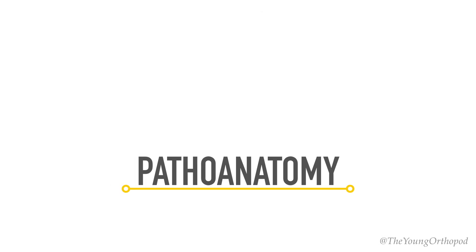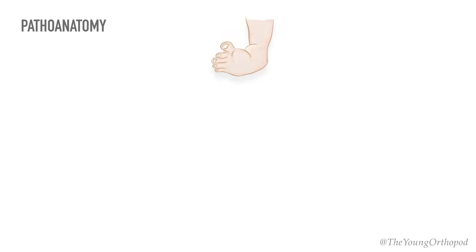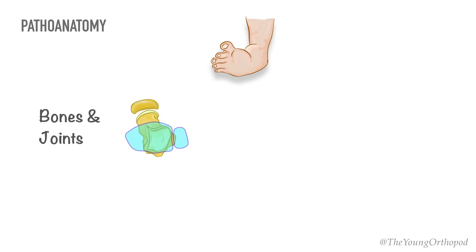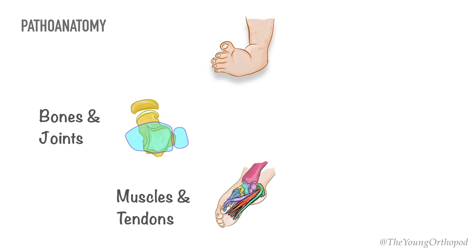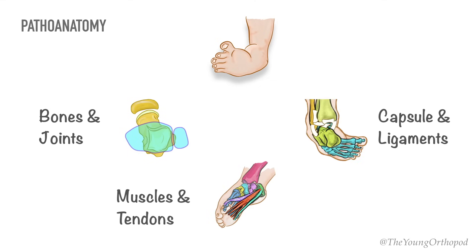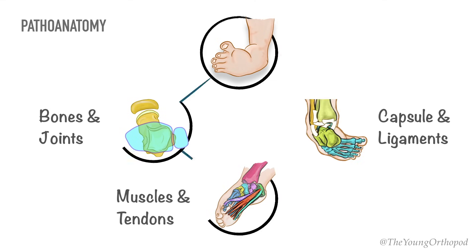For learning purposes, the pathoanatomy of the clubfoot can be grossly divided into pathological changes in bones and joints, muscles and tendons, and capsules and ligaments.